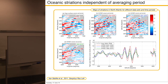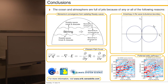In conclusion, the ocean and atmosphere are full of jets because of any or all of the following: momentum convergence from radiating Rossby waves; Eliassen-Palm fluxes via Reynolds stresses and form stresses; the wave-turbulence boundary anisotropy in 2D turbulence; and possibly preferential eddy pathways.